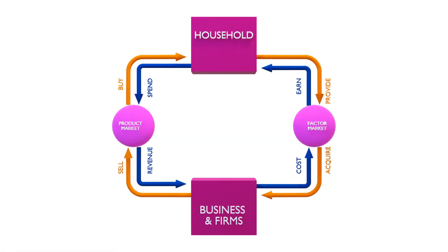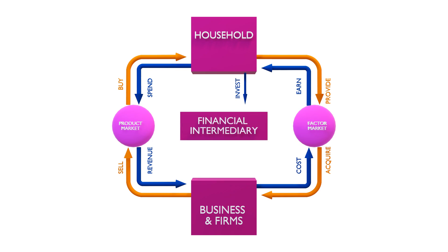Now suppose households have extra cash — they reach a positive marginal propensity to save. With discretionary income and all needs and wants satisfied, what do they do with the extra money? They will invest it in the money market, which is regulated by financial intermediaries — ranging from public banks and government banks to private banks and private financial institutions.